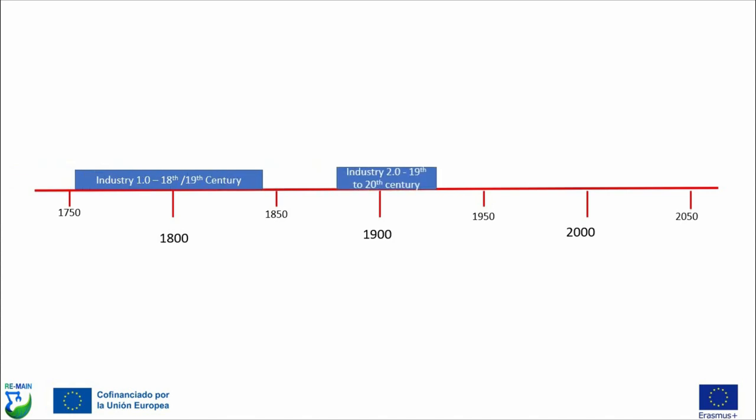By the late 18th to early 19th century we had Industry 2.0, which was also known as the Second Industrial Revolution, characterized by the introduction of mass production and assembly lines. Industry 3.0 came along around the middle of the last century and was characterized with the mass automation of industrial processes. And now around 2010 or even a little earlier, we have Industry 4.0, which is our current Industrial Revolution, with a strong focus on the internet of things and digitization of manufacturing processes.